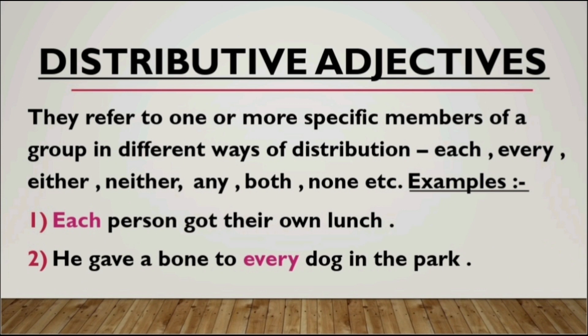The next example is: "He gave a bone to every dog in the park." Here, 'dog' is the noun and the distributive adjective is 'every,' so the bone was equally distributed to individual dogs present in the park. That is what distributive adjectives do — they distribute the noun mentioned in the sentence and determine or specify it individually, laying focus on individual nouns in distribution.